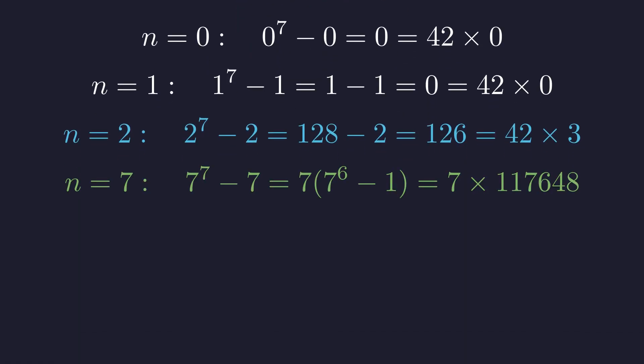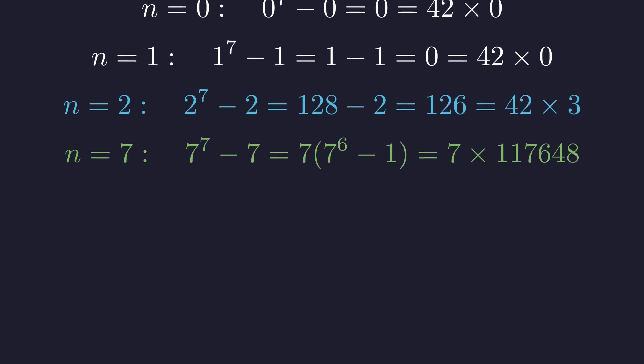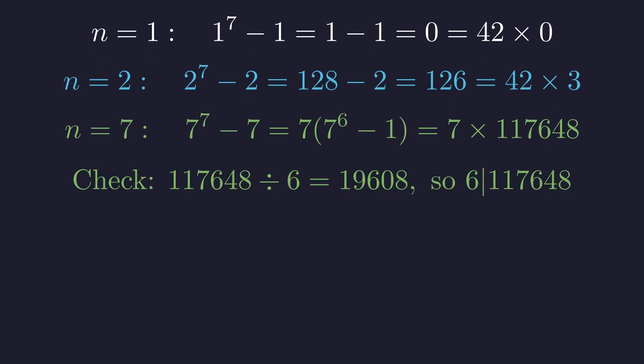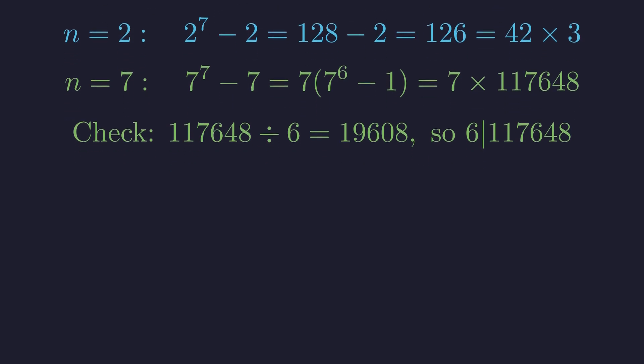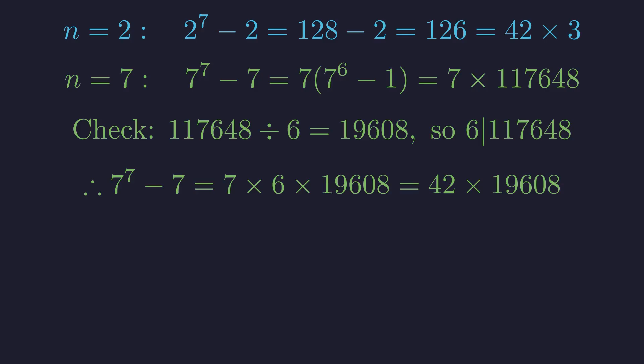For n = 7, we can factor out 7 right away. 7^6 is a big number, 117,649. So 7^6 - 1 is 117,648. If we divide this by 6, we get exactly 19,608. So 6 definitely divides 7^6 - 1. So 7^7 - 7 = 7 × 6 × 19,608, which is exactly 42 × 19,608.